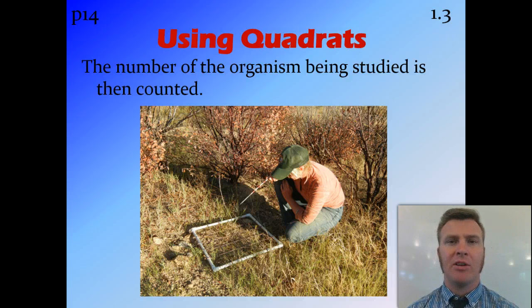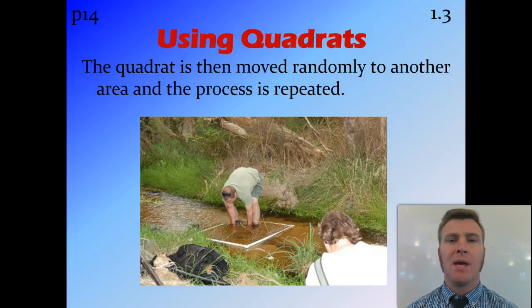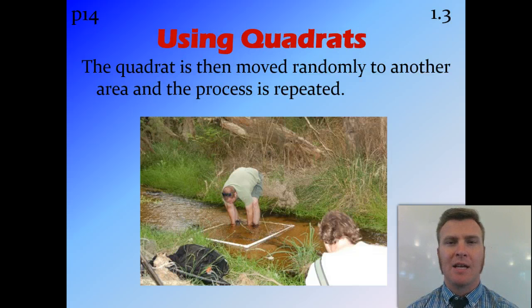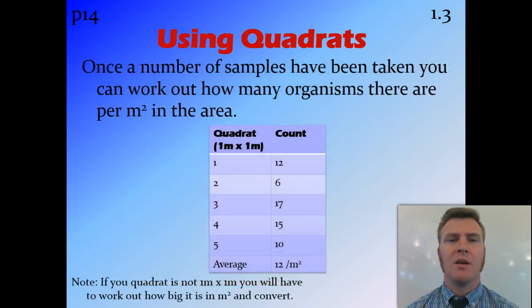You might put your one meter square down and count three daisies in a field. You then pick up your quadrat and move it somewhere else — again, this must be done randomly throughout the whole area you're looking at, not just places that are easy to get to or not too far for you to walk.